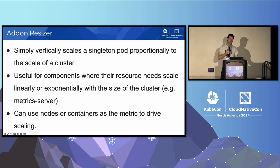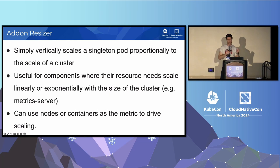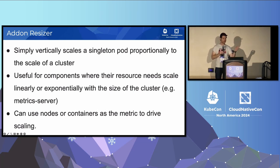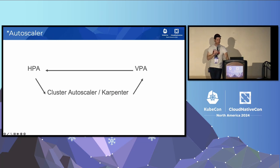Addon Resizer has been around for a long time. It simply vertically scales a singleton pod proportionally to the scale of a cluster. The canonical example is Metrics Server — if you've operated Kubernetes clusters, you may have used Addon Resizer for that. The resource needs to scale linearly or exponentially with the size of the cluster. CoreDNS is another example. It can use nodes or containers as the metric to drive scaling.